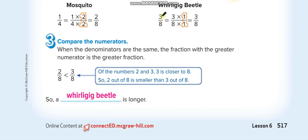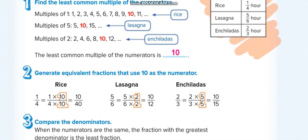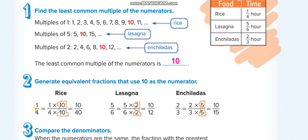Now we'll make the numerators the same. We have three fractions and we want to find the least common multiple of all the numerators. If you want to make the denominator the same, find the LCM of all the denominators. It depends on which approach you choose.